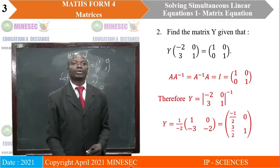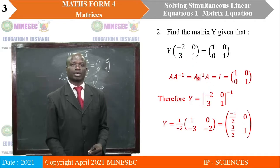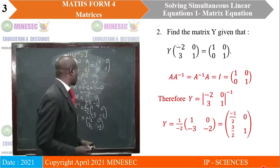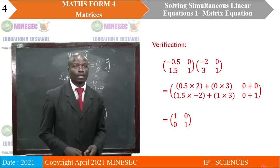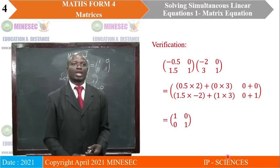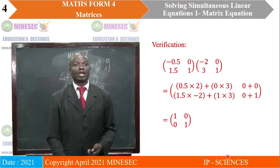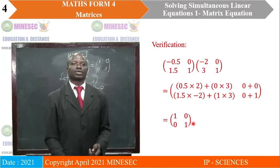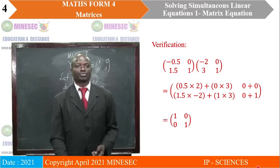So we found Y is the inverse of this matrix, as we said. Y is 1 over the determinant, which is negative half, times the adjoint, and it gives us this matrix. When we take this matrix and multiply it by the original, it actually gives us [1, 0; 0, 1], which means that this matrix is correct. We've calculated well.